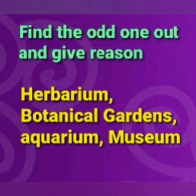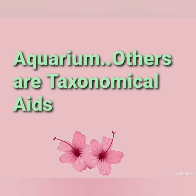Find the odd one out and give reason. Herbarium, botanical gardens, aquarium, and museum are given in the question. The answer is aquarium, because the others — herbarium, botanical gardens, and museum — are all taxonomical aids.